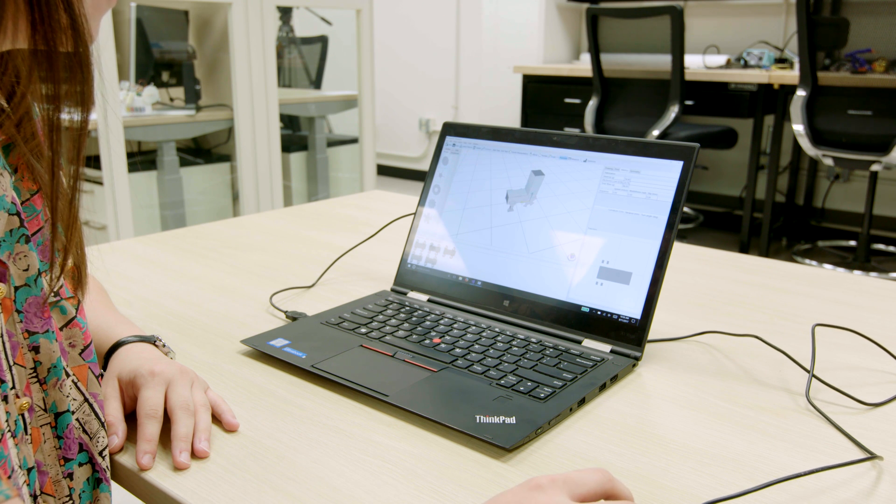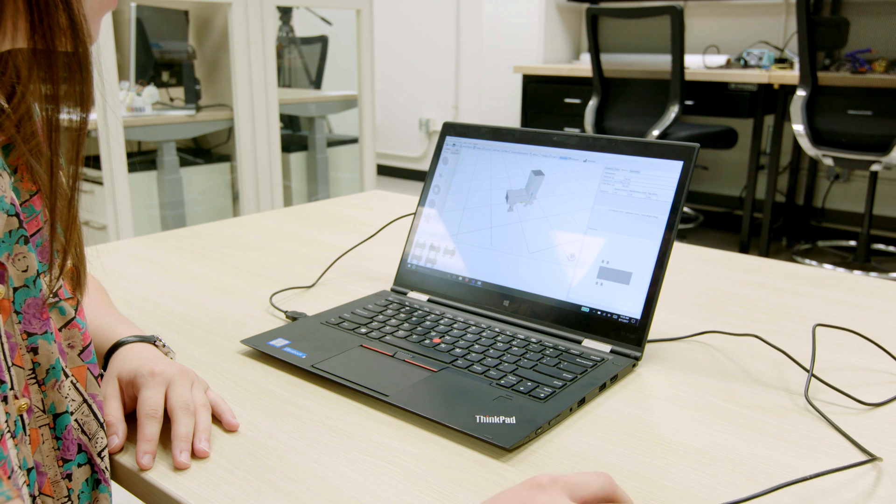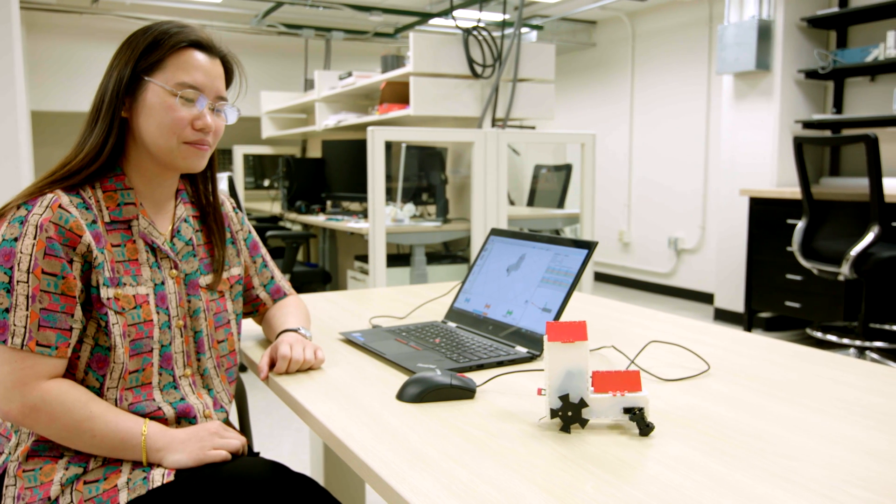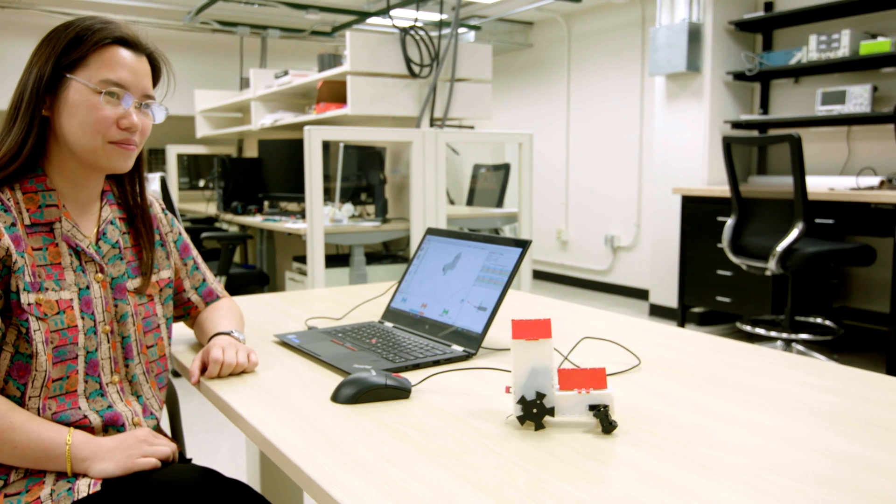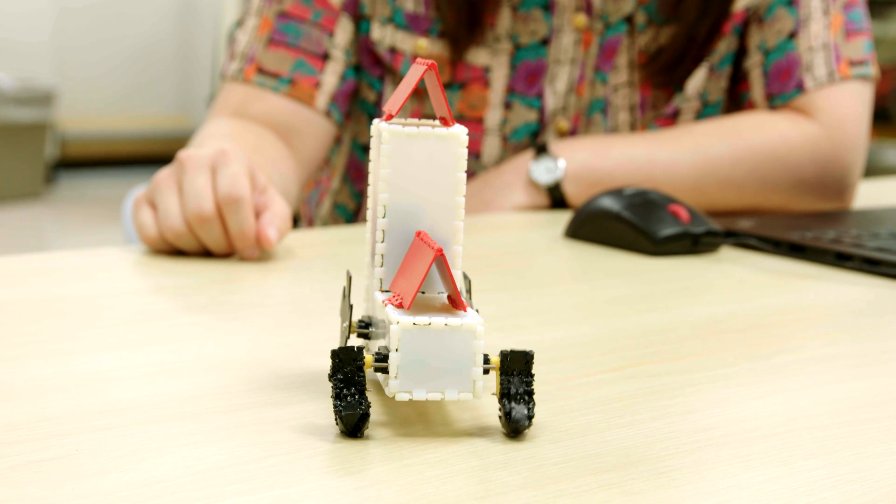People can interact with the 3D robot, look at its motion, figure out what they want the robot to do, and the software will automatically create the fabrication plan. It'll tell them how to assemble it, and they don't need an engineering background to create those plans themselves.